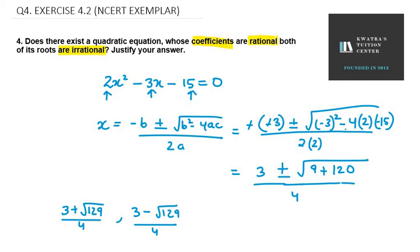So yes, the statement is true. If you have coefficients as rational, there might be possibility that your roots will be irrational. That's your answer for question number 4.